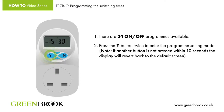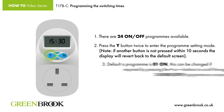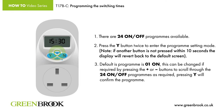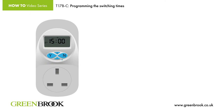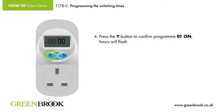Note: if another button is not pressed within 10 seconds, the display will revert back to the default screen. Step 3: The default program is 01 on. This can be changed if required by pressing the plus or minus buttons to scroll through the 24 on/off programs as required. Pressing Y will confirm the program. Step 4: Press the Y button to confirm program 01 on.